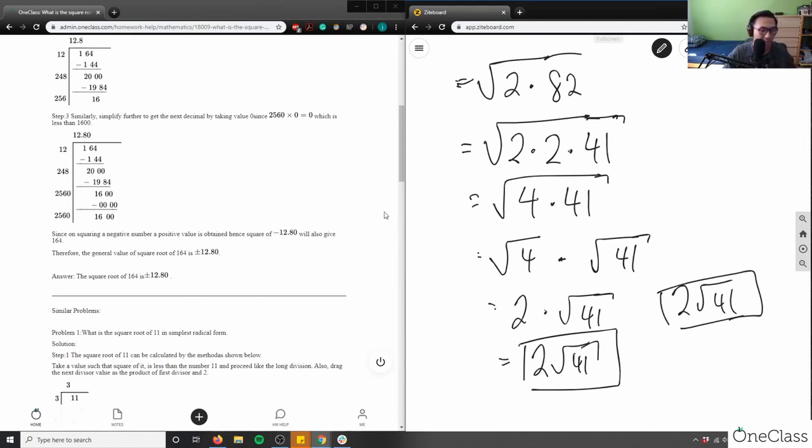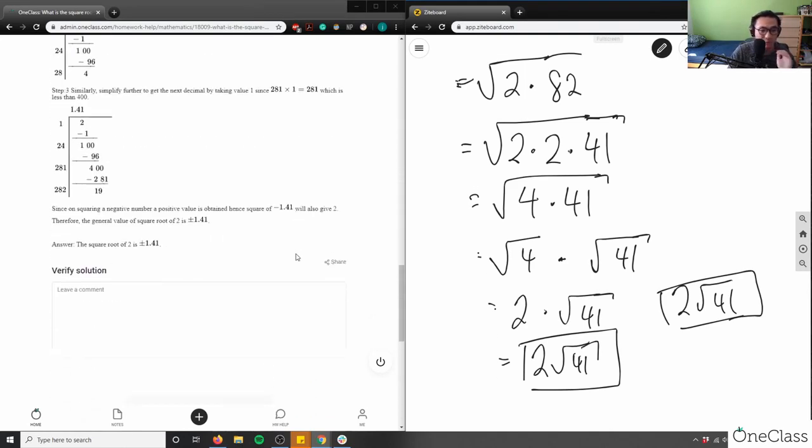So in this case, I think this is actually a wrong answer because this here is not the exact value here. 2 root 41 would be 12.80, which is correct, but the answer you should have written as 2 root 41.